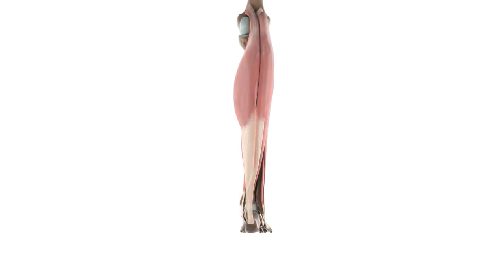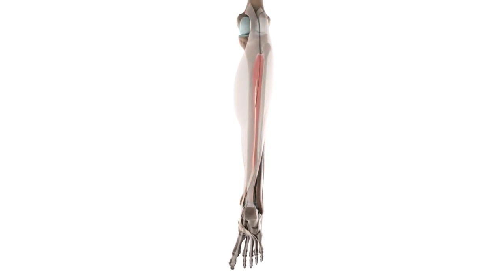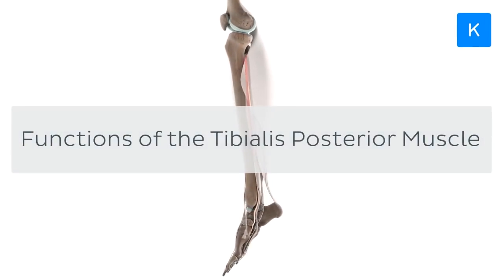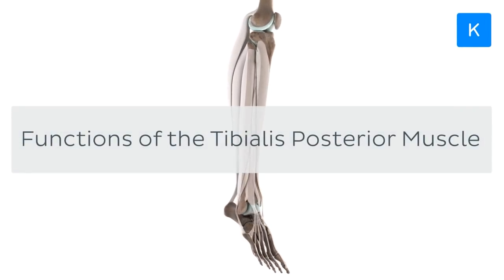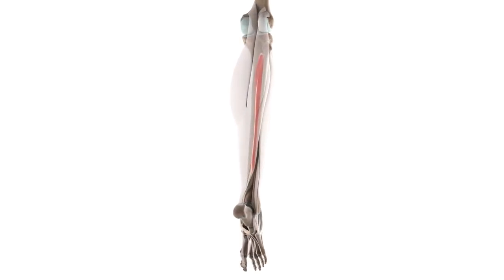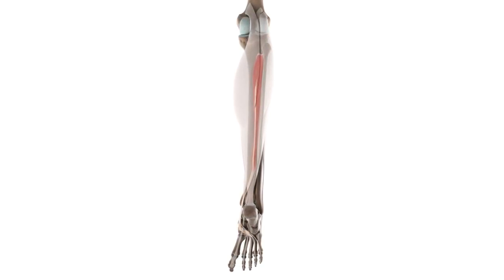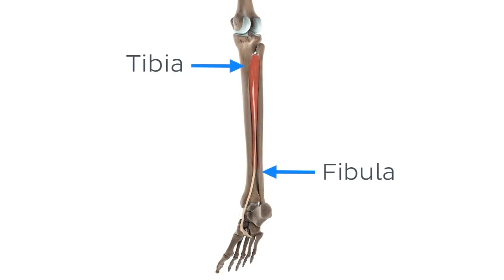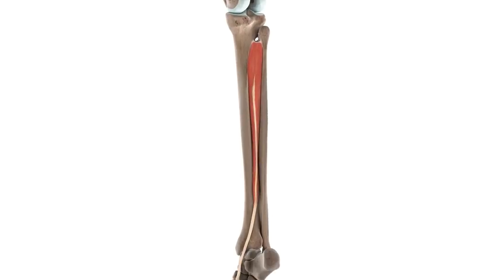Stay with me and I'll explain a possible reason for this and a lot more as we learn about the functions of the tibialis posterior muscle. Before we explore the different functions of the tibialis posterior, let's first remind ourselves of its anatomy. This muscle is found in the deepest portion of the posterior compartment of the leg, between the two bones of the leg which are the tibia and fibula.